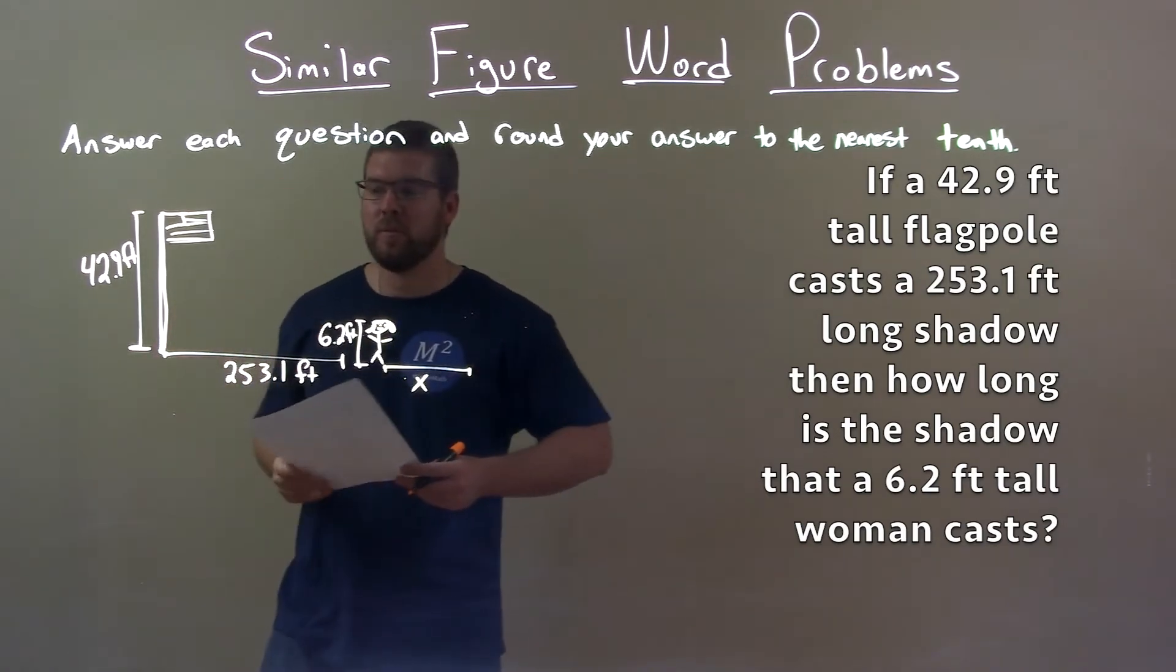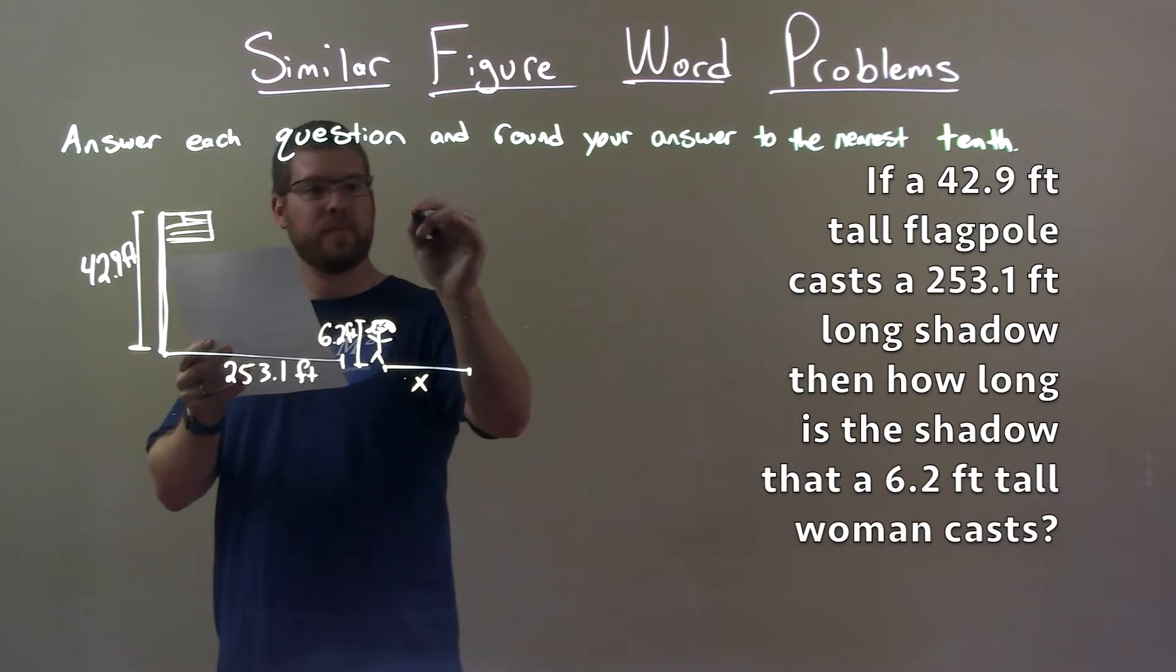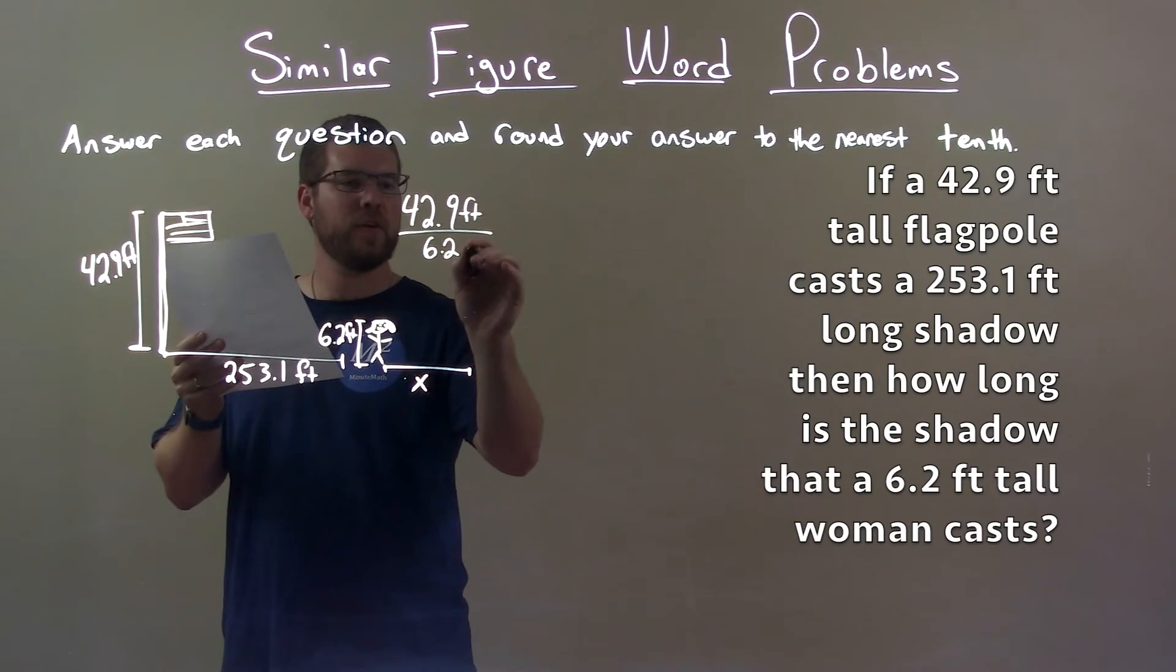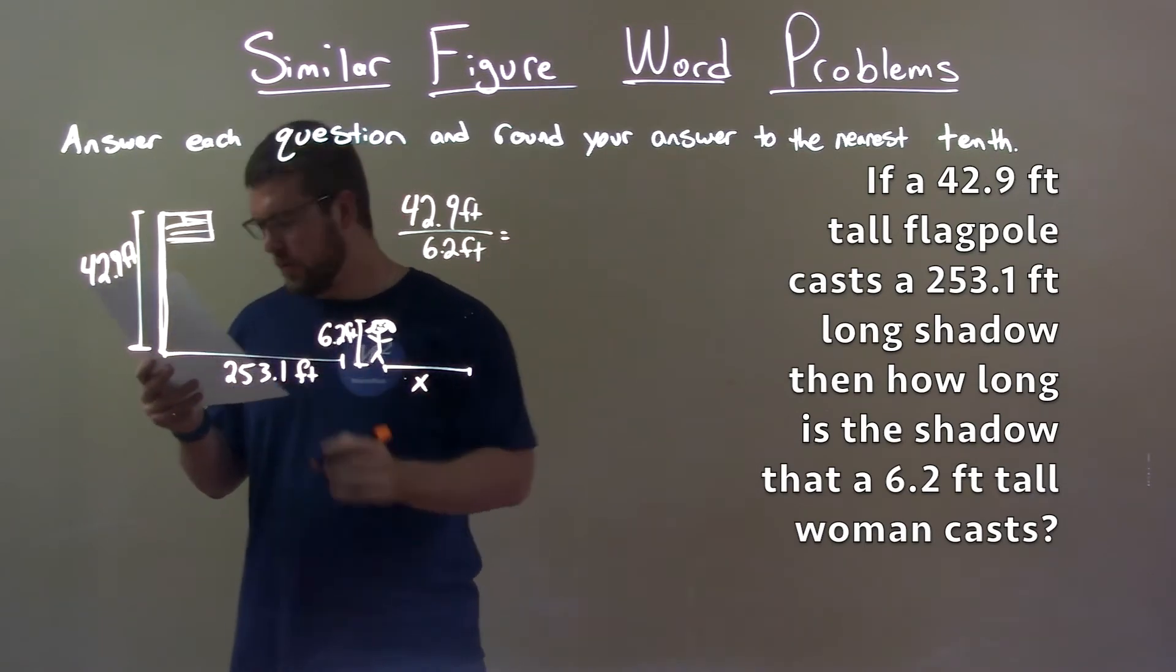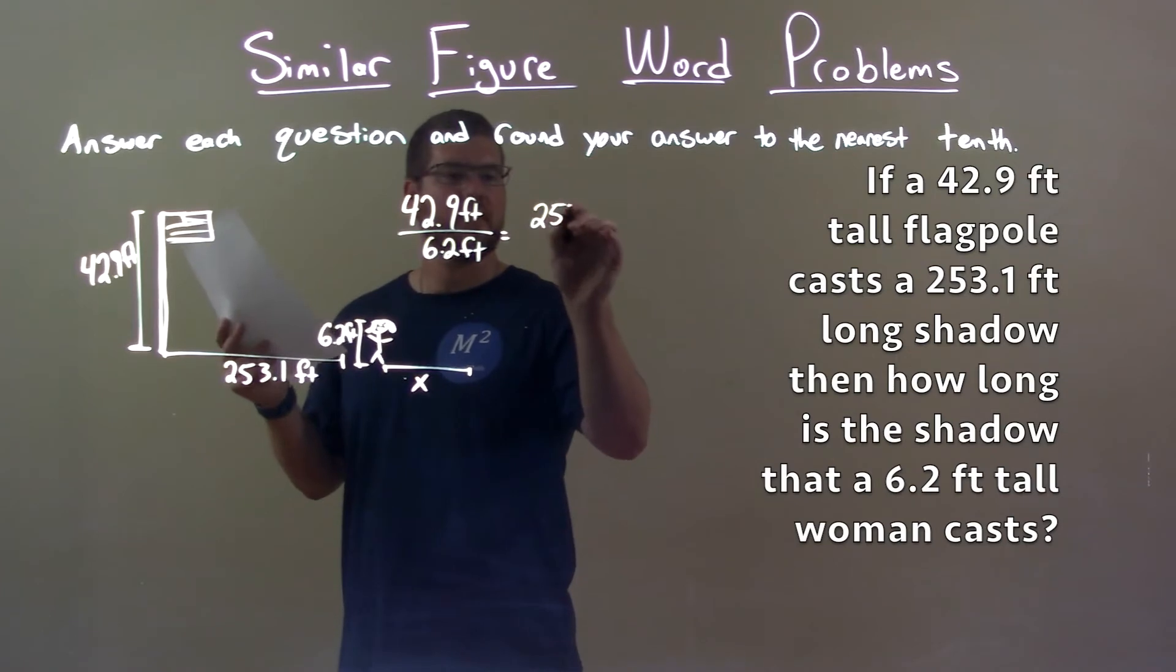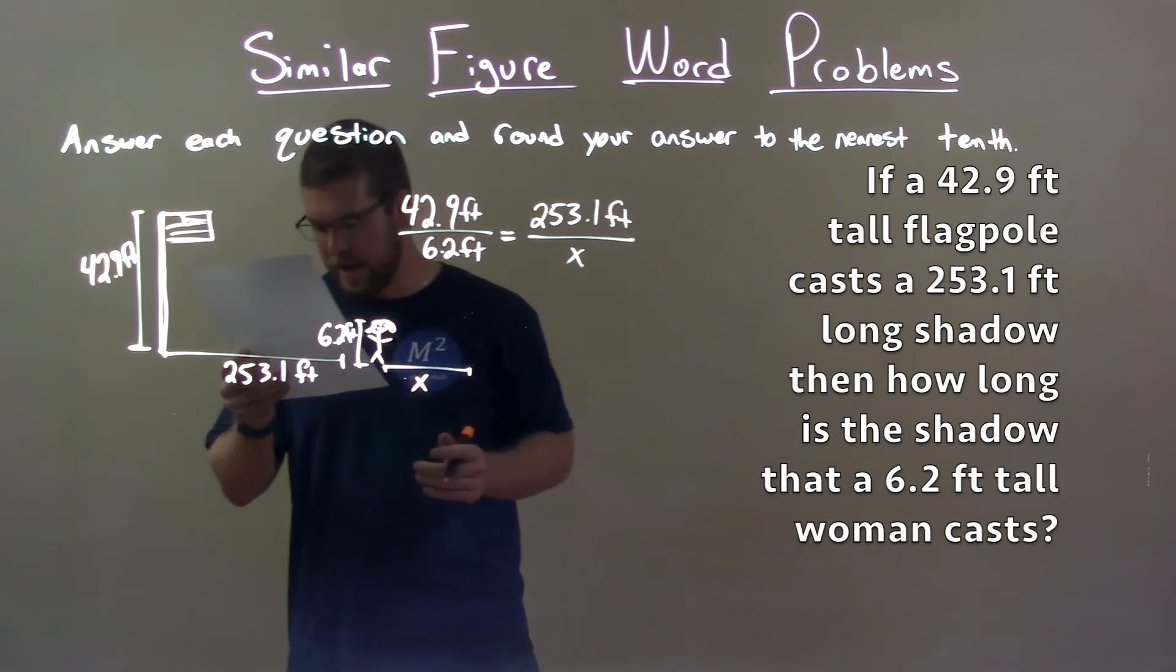So with that information, we want to create a proportion. The height, 42.9, over her height, which is 6.2 feet, should equal the relationship of the shadows: 253.1 feet over x, her shadow length.